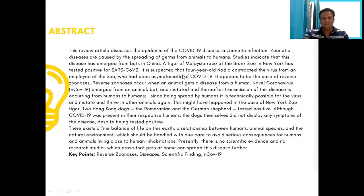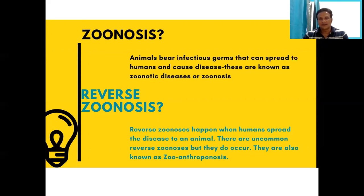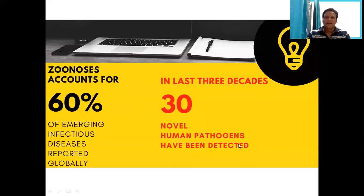Zoonosis is a name heard by many people — animals carry germs that can be transmitted to humans when you come in contact with them. But reverse zoonosis is the reverse: a person who has a particular disease or is carrying germs then transmits them to other animals that are not infected. This is called reverse zoonosis.